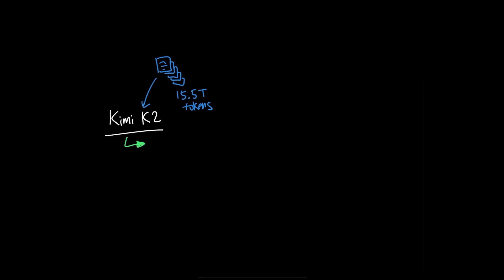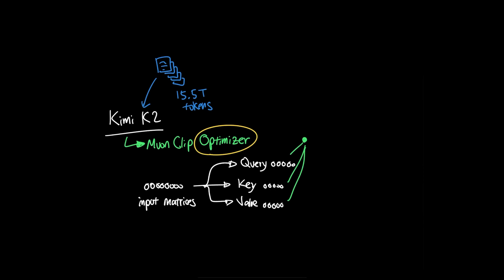In comparison, Moonshot's pre-training technique for KimiK2 showed their impressive Muon Clip Optimizer, where building on top of their existing Muon Optimizer by applying clipping to the key matrices and the query matrices to prevent attention score explosion, which resulted in their models to be trained faster without lost spikes.